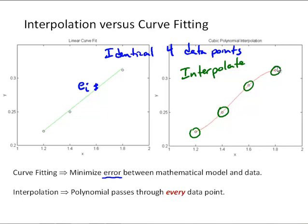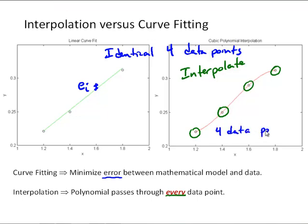So numerically, what's happening with curve fitting is we're minimizing the error between the model and the data. With interpolation, we're finding a polynomial that passes exactly through every data point. In this case, we have four data points, which means we are going to have a cubic polynomial. We'll talk more about why in a minute.